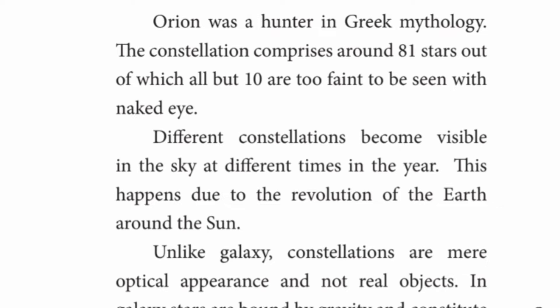Different constellations become visible in the sky at different times of the year. This happens due to the revolution of the Earth around the sun, which is why different constellations are visible in different seasons.